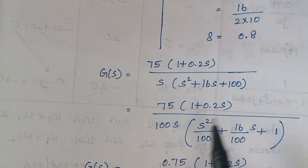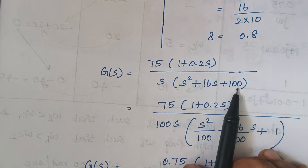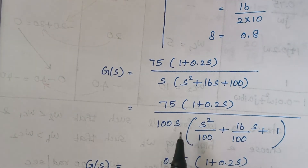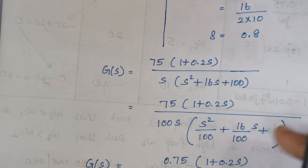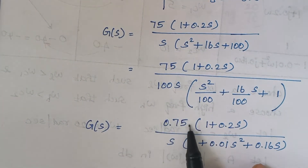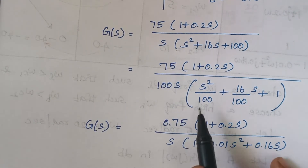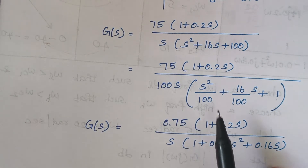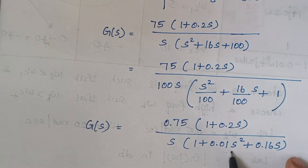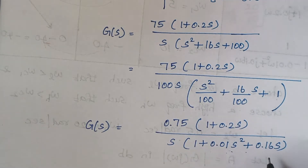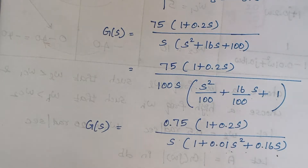The next step is to simplify the expression. In the denominator, we take 100 outside. When you take 100 outside, you get s²/100 + 16s/100. So 75/100 is 0.75, and 16/100 is 0.16. The simplified format becomes: 0.75 × (1 + j0.2ω) divided by jω × (1 + j0.16ω − 0.01ω²).